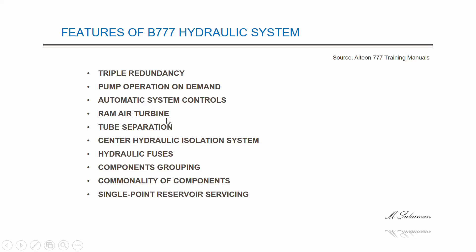Here you can see a ram air turbine. It is an emergency source of hydraulic power for primary flight controls, used if all usual pressure sources become unavailable during flight. Another feature is tube suppression: the location of hydraulic system tubes decreases the risk of multiple system losses from a single failure source. Left and right system tubes are on opposite sides of the body, with maximum separation of tubes and pipes in wheel wells and wings.